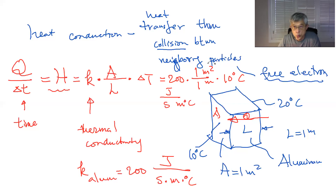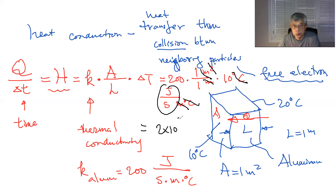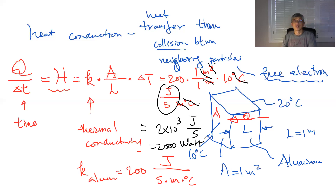So the meter squared divided by meter leaves one meter, and that meter cancels with the meter in the denominator. The degree C cancels out too. So you can see it's joule per second. With 10 degrees C on one side and 20 degrees C on the other, the rate of heat transfer is going to be 2 times 10 to the 3 joule per second, or 2,000 watts. So that's heat conduction. We're going to stop here. Bye bye.